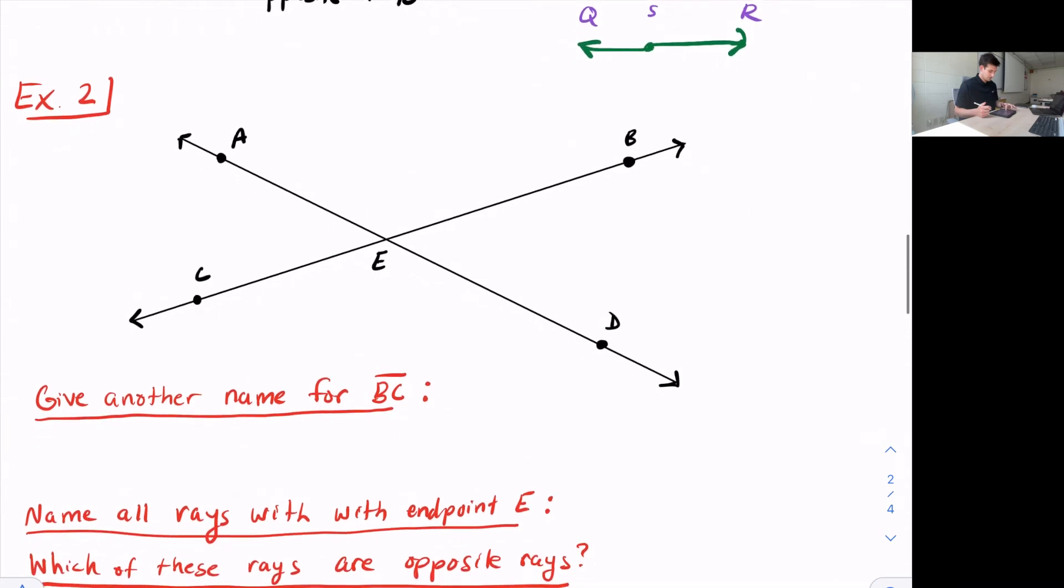So let's look at an example with that. So we have two lines that are intersecting here at point E and they want us to give another name for segment BC. So segment BC would be from here to there. So we could just call this segment CB.